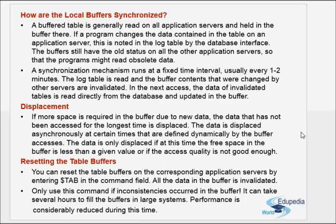A buffered table is generally read on all application servers and held in the buffer there. If a program changes the data contained in a table on an application server, this is noted in the log table by the database interface. So when changes are made on one particular application server to the table, the buffer plus the database of that instance is updated. But the other application servers have their own buffers which have the old data — when they read that data, they will still get the old values. That's why a synchronization program runs, and whenever the buffer of any instance gets updated, it is recorded in the log table.